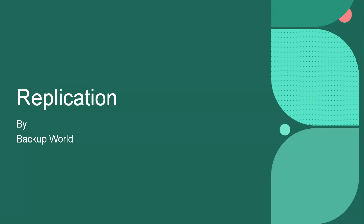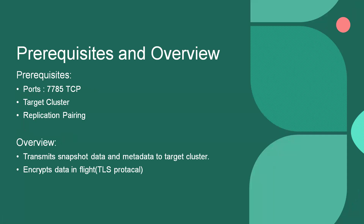Welcome back to Backup World. Today we'll learn about replication between two Rubrik clusters. To configure replication, we should open port 7785 between Rubrik clusters bi-directionally. We need two clusters — source and target — and a replication pairing created between them. Replication transmits snapshot data and metadata to the target cluster. Replication uses encryption — data in flight is protected using the TLS protocol.